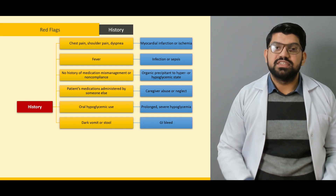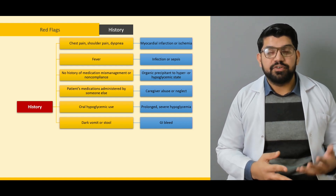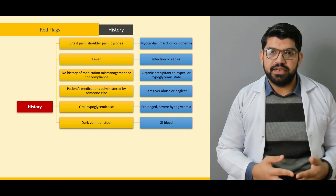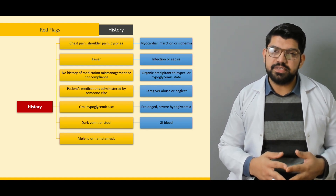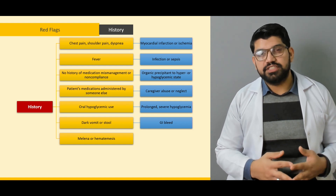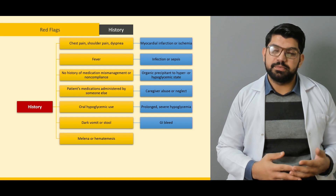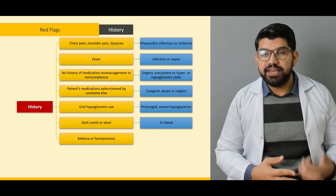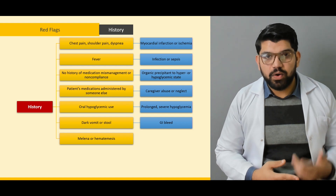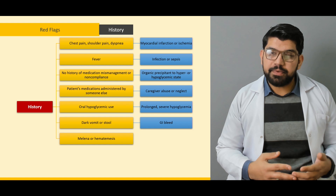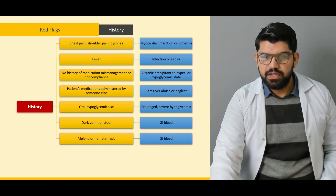Dark vomit or stool — think of GI bleed. Patients with diabetes are prone to GI bleed. Ruptured ulcers, ischemia, and perforated ulcerations can lead to GI bleed. Melena and hematemesis — apart from hepatic liver diseases, most commonly decompensated liver disease due to hepatitis C or B, liver cirrhosis, or alcoholic liver disease — patients with diabetes can present with melena and hematemesis. Melena is occult blood in the stool, and patients with mesenteric ischemia can present with occult blood or melena. Mesenteric ischemia is a serious complication of diabetes, making GI bleed a key concern.